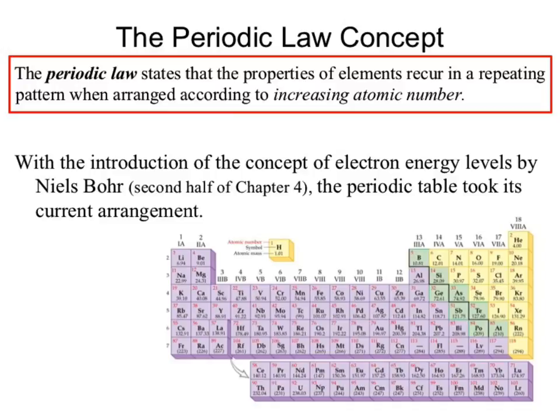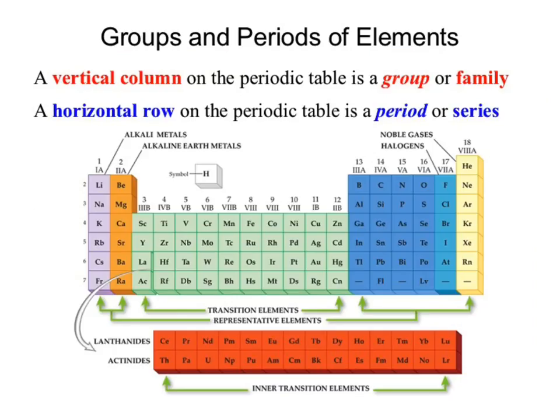Our periodic law concept says: increasing atomic number. With that kind of discovery, we get the final formal organization of the periodic table, because the concept of our orbitals is already given to us in the periodic table. When we look at it, we get things known as groups and periods. The vertical column is our group or family; the horizontal row is the period or series.